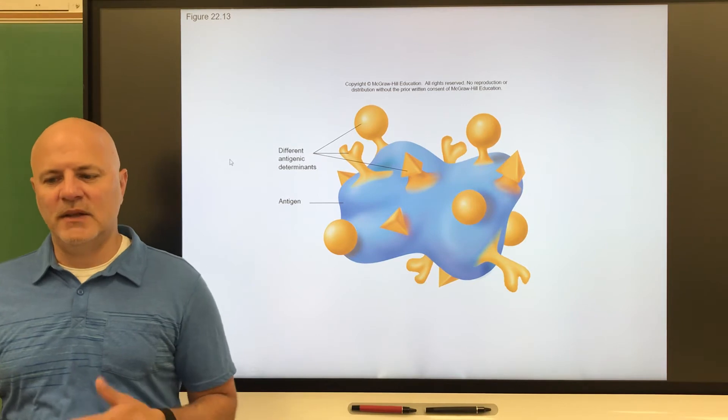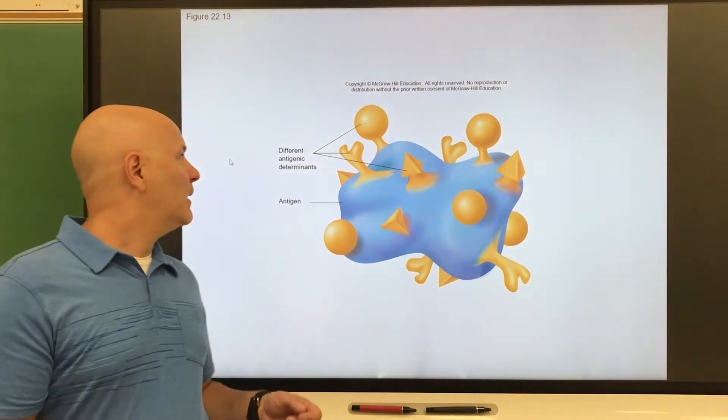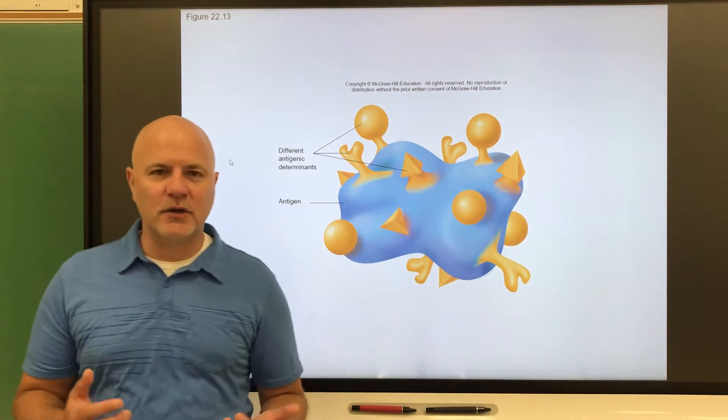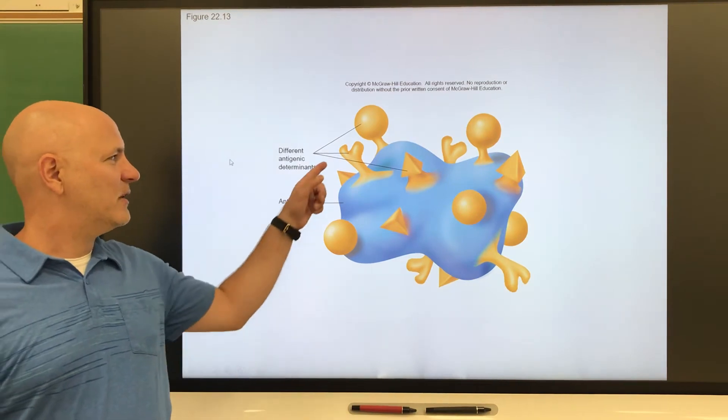Next is reactivity. This is ability to react with activated lymphocytes and antibodies. Lastly, they have antigenic determinants also known as epitopes. These are parts of the antigen that are immunogenic.